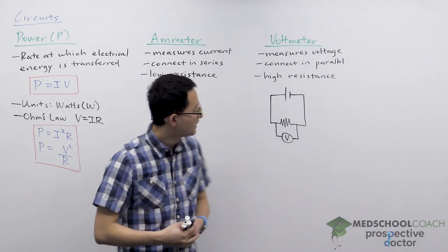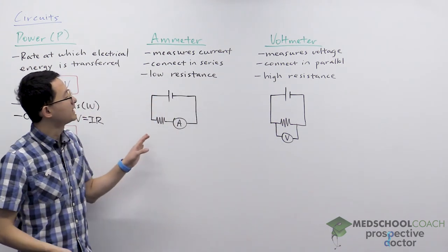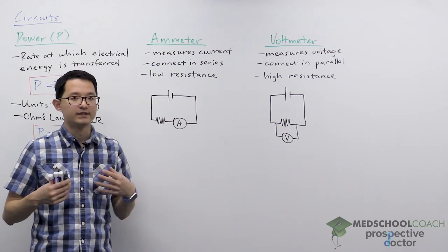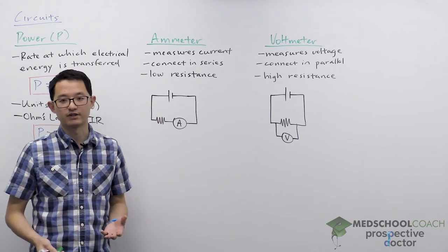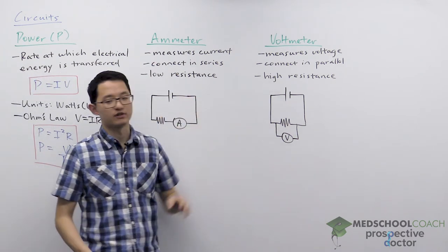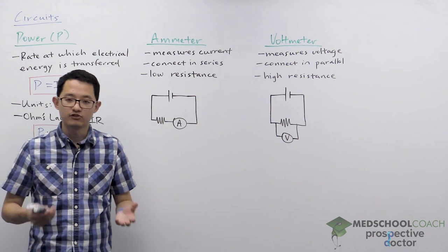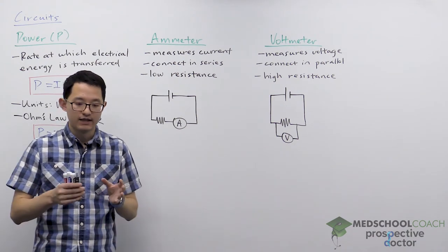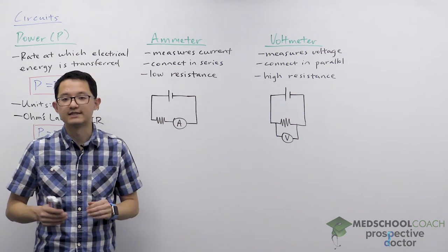So next I want to talk about meters. Meters are devices that are used to measure different values within a circuit. Ammeters are used to measure the current, voltmeters are used to measure the voltage, and you just need to know how to use these devices and also know the resistances of these devices.